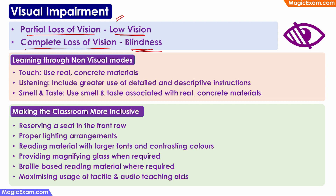So how can learning happen in the classroom in case of children with low vision or blindness? Learning can happen through non-visual modes. Non-visual modes are touch, sound — which is listening — and smell and taste. So we are using all the other senses to make learning possible in the classroom.